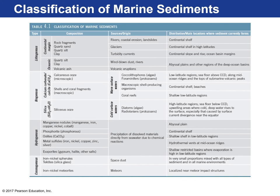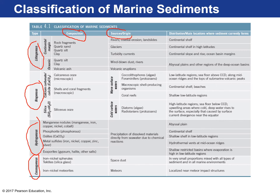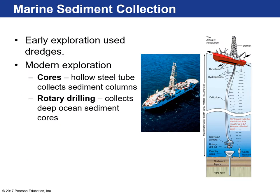Here is a chart classifying the four types of marine sediments: lithogenous, biogenous, hydrogenous, and cosmogenous. This chart covers what each category is composed of, where it comes from, and its distribution in different marine provinces. You can download the PowerPoint to reference this.